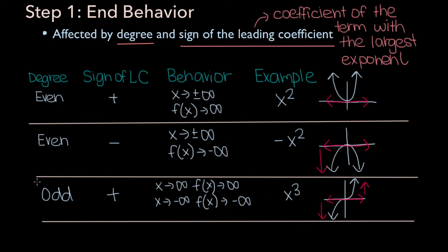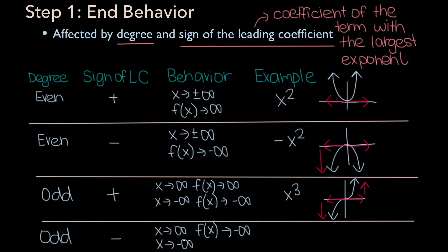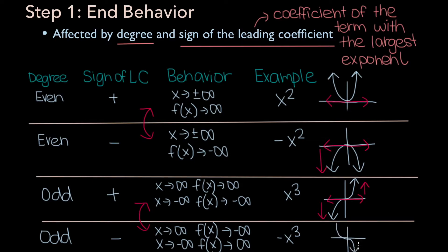As x approaches negative infinity, f of x approaches negative infinity as well. For the fourth and final scenario, consider a polynomial with an odd degree and a negative leading coefficient. As x approaches infinity, f of x will approach minus infinity, and as x approaches negative infinity, f of x will approach positive infinity. You should notice a pattern: if two polynomials have either both even or both odd degrees but leading coefficients of opposite signs, their end behavior will be opposite. The example here is negative x cubed — as x approaches positive infinity, f of x approaches negative infinity, and as x approaches negative infinity, f of x approaches positive infinity.